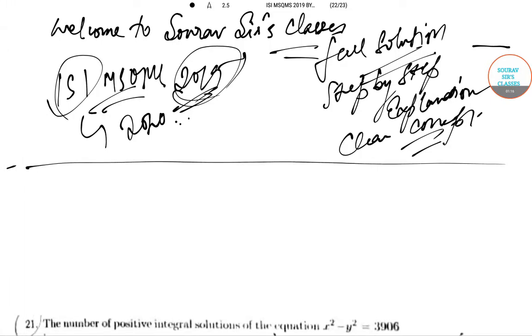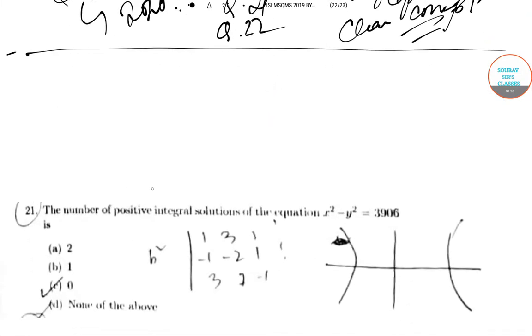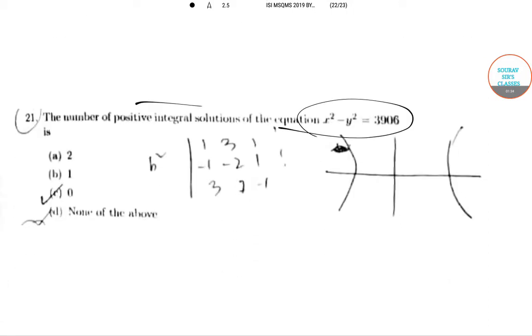Today we will be solving two questions: question number 21 and question number 22 of ISI MSQMS 2019 paper. Let's solve question 21. Question 21 is: the number of positive integral solutions of the equation X² - Y² = 3906 is what? So let's solve this question.